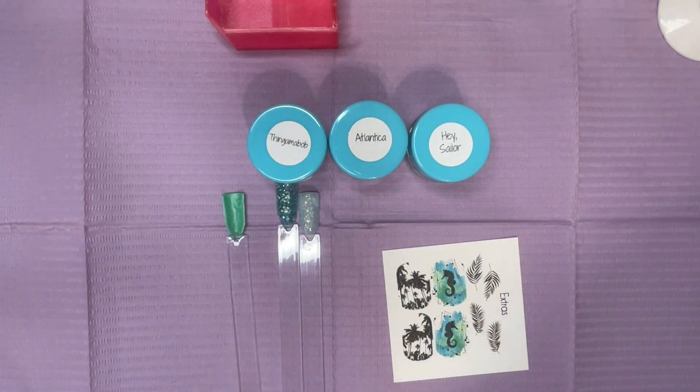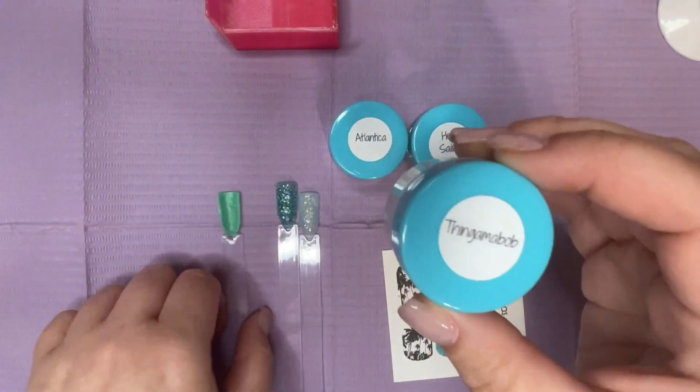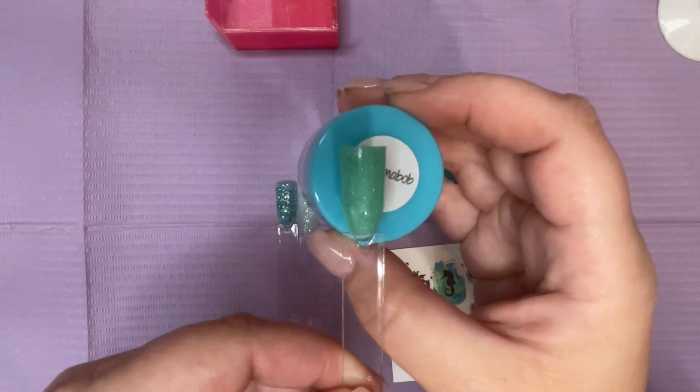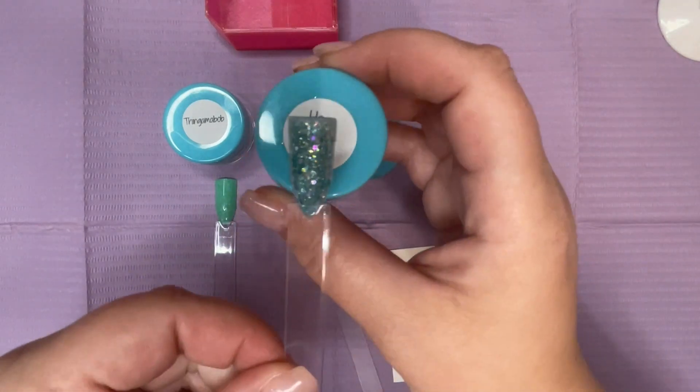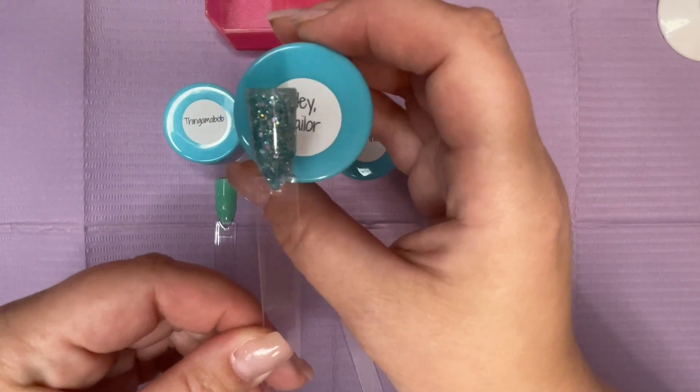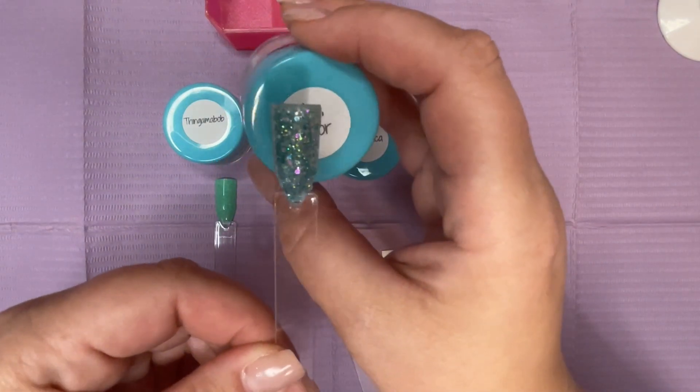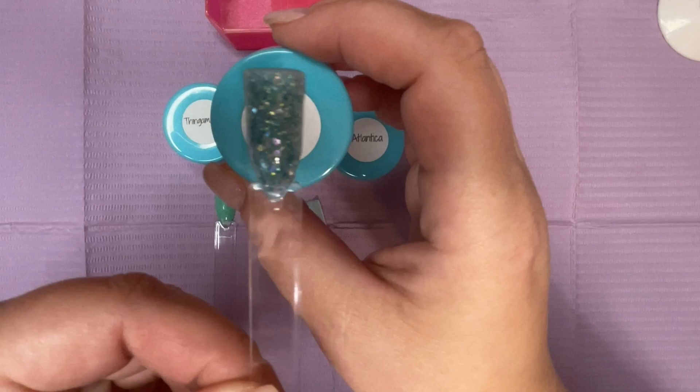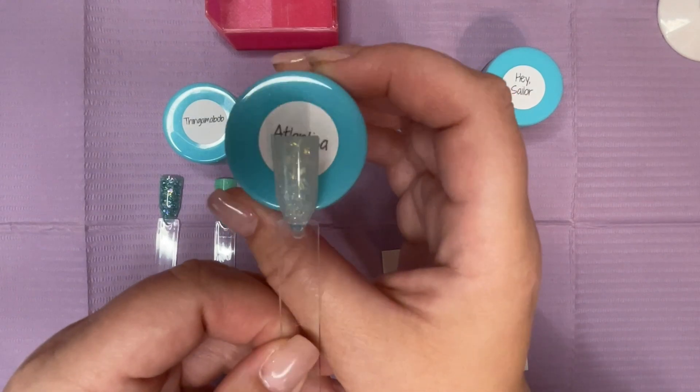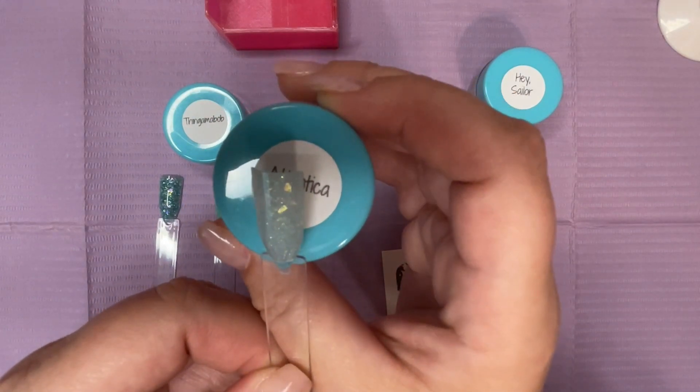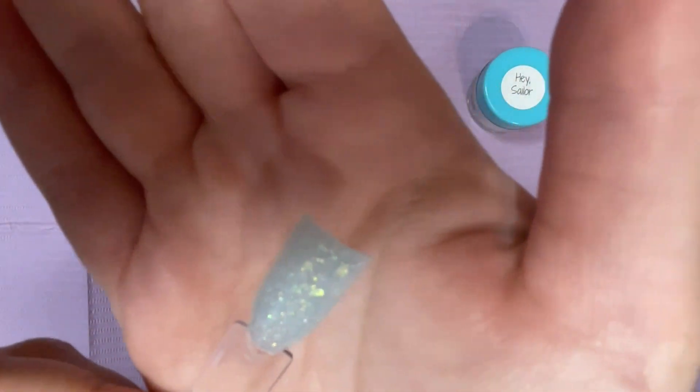At the end I'll post another mani I did using some other colors from this collection earlier in April. So this is Thingamabob, which is this gorgeous shimmery teal color. Then I have Hay Sailor, which is a medium glitter with a whole bunch of different colors in it including teal, some green, purples, blues, a lot of different shifting colors. And then the namesake to the collection, Atlantica, which is a really light, almost crystalline blue color with fine shimmery glitters and some larger glitters as well.